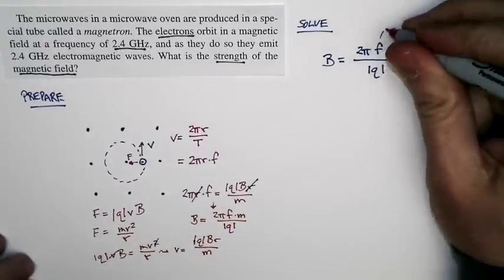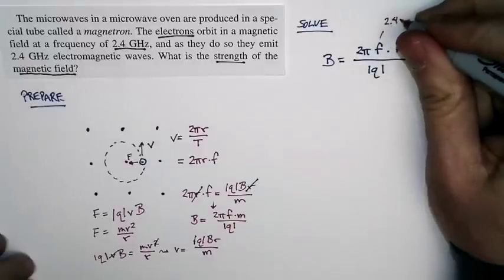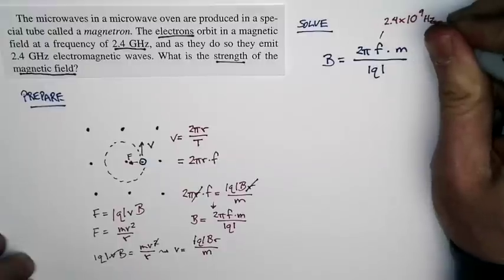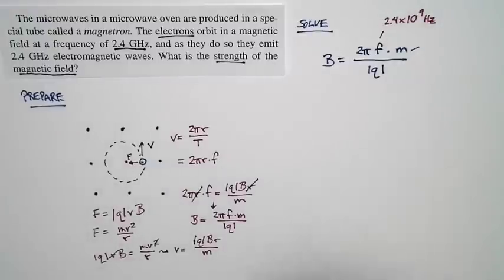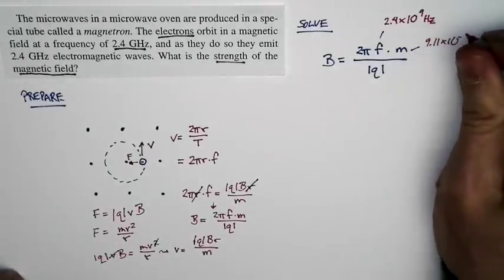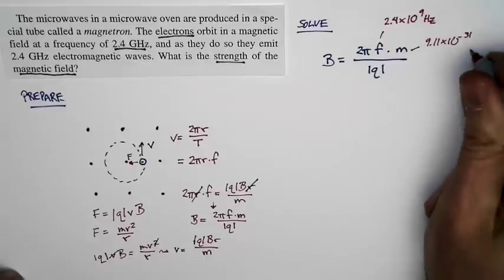The frequency is 2.4 gigahertz, 2.4 times 10 to the ninth hertz. The mass is the mass of an electron. We know the mass of an electron, that's just 9.11 times 10 to the minus 31st kilograms.